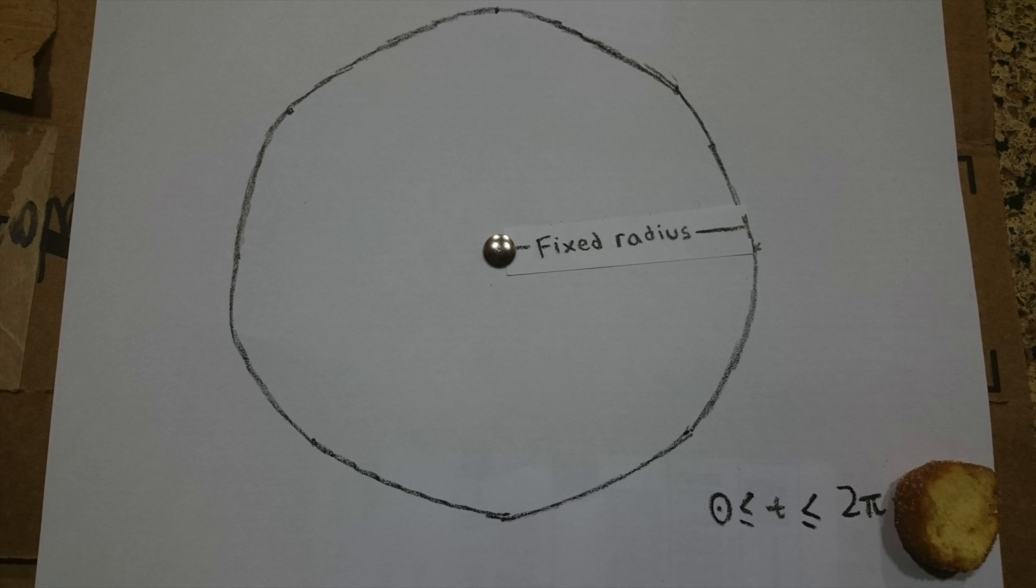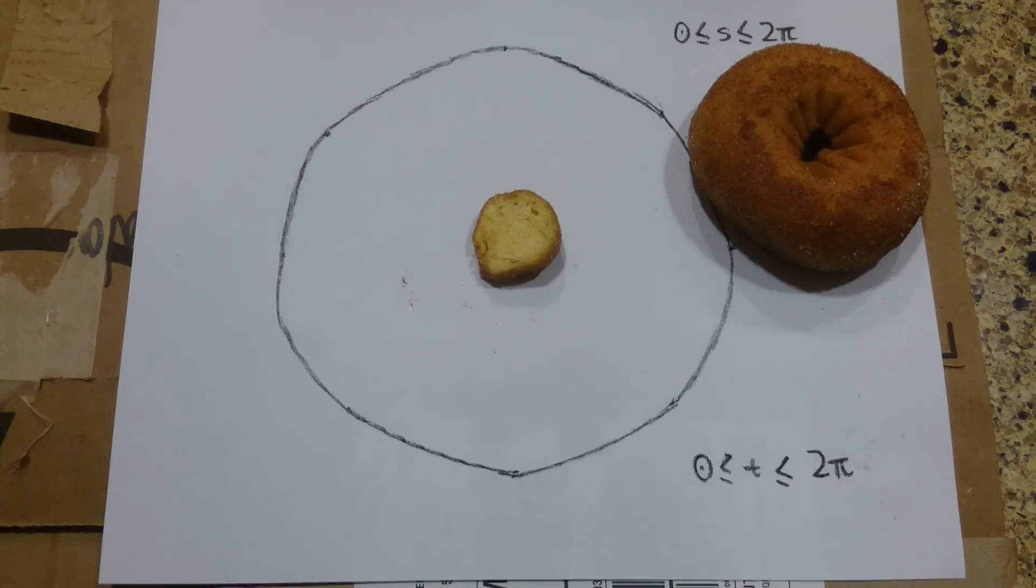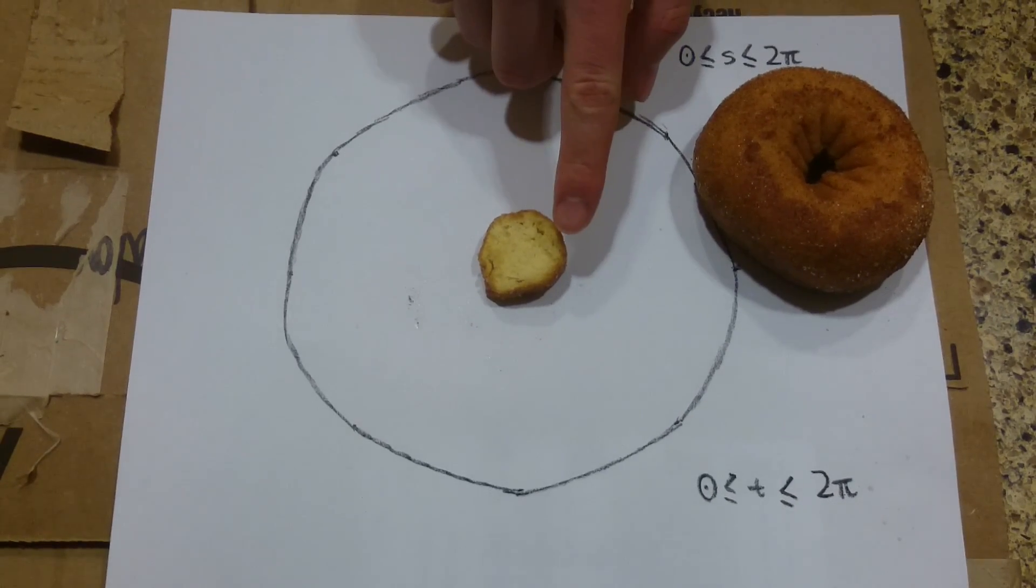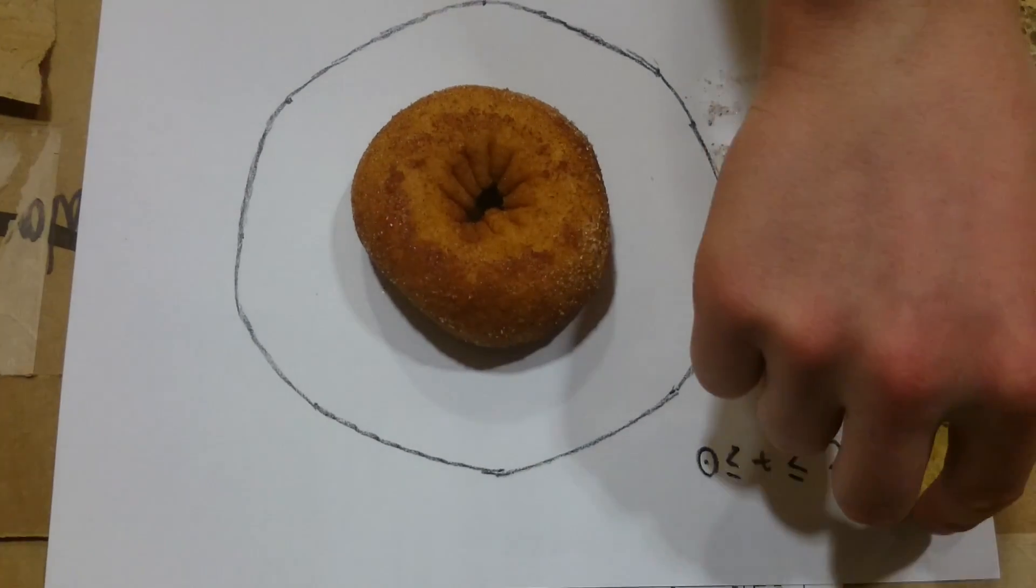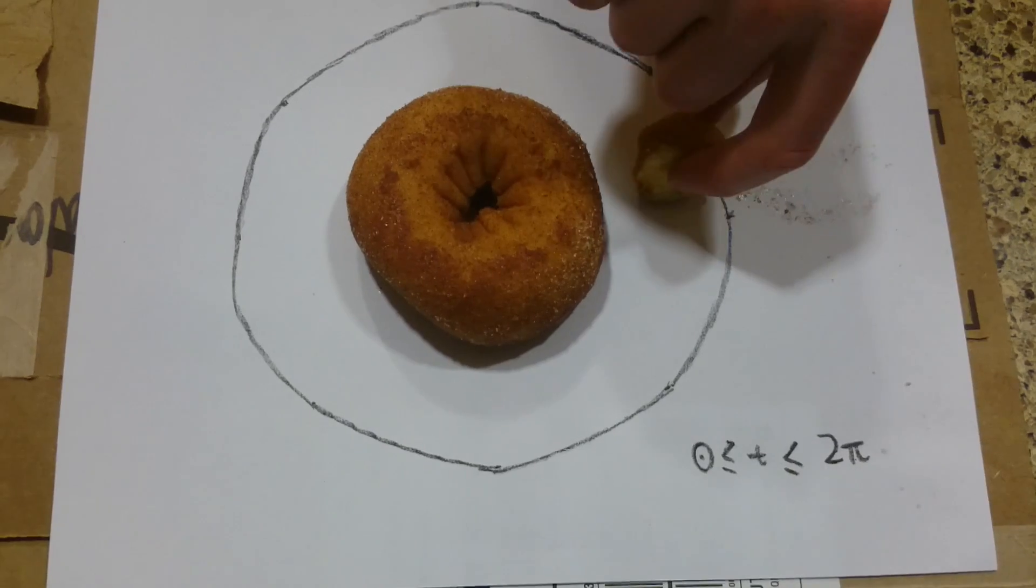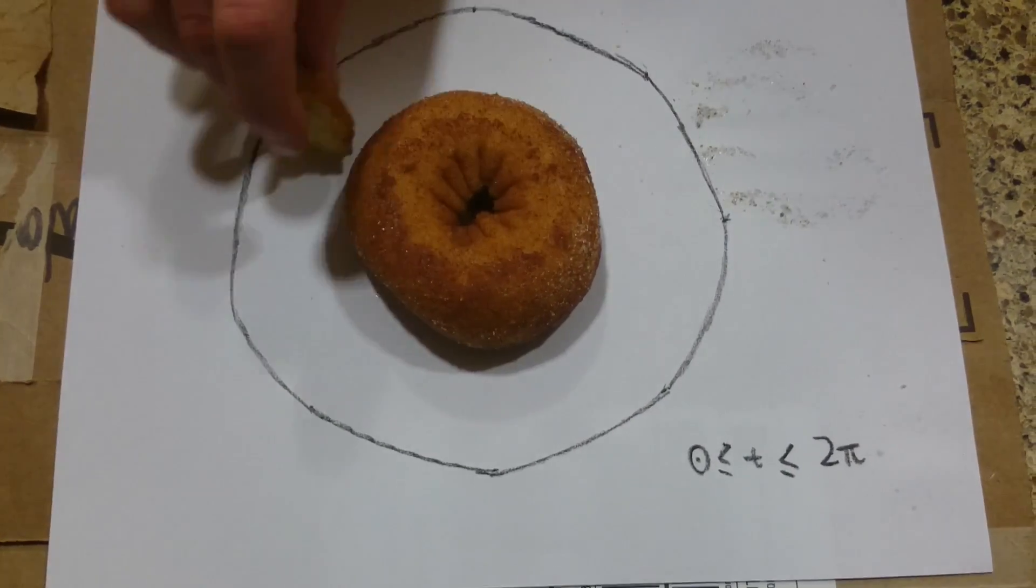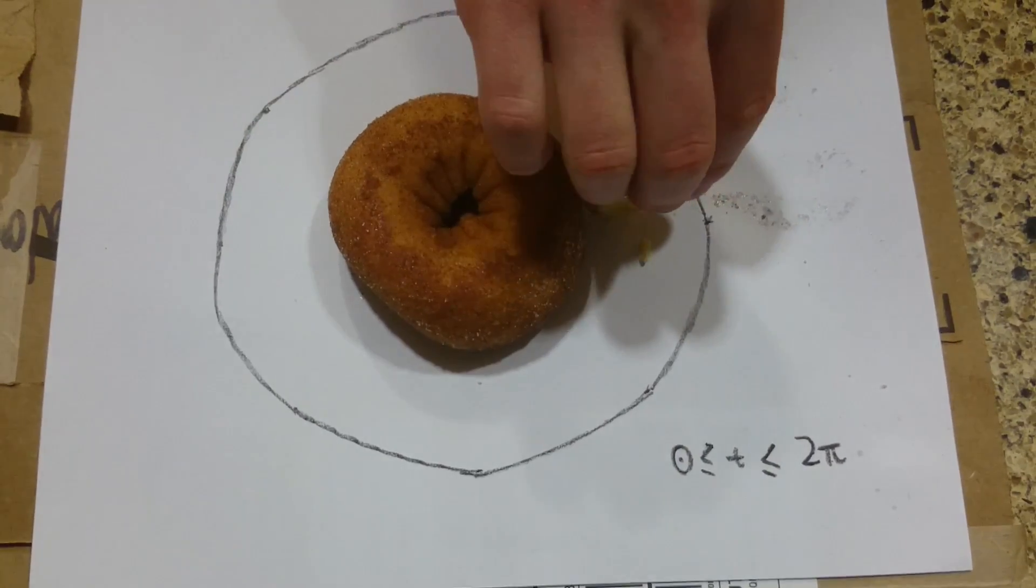We will use t to parametrize the donut slice as it goes from 0 around to 2π. And we will use s to follow the donut slice as it goes around the circle from 0 to 2π.